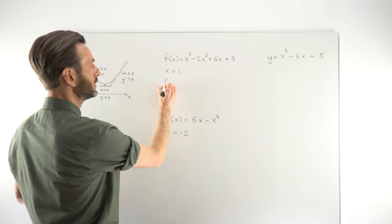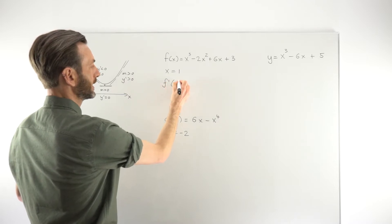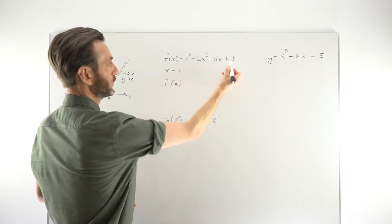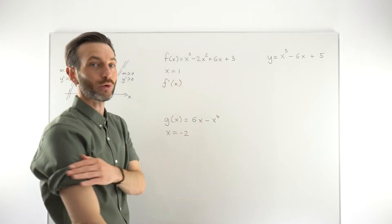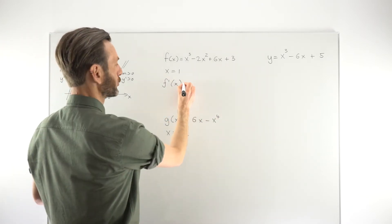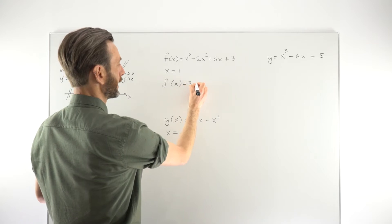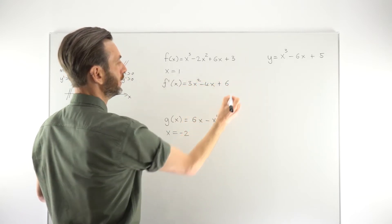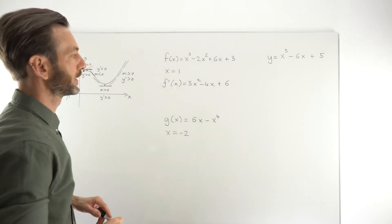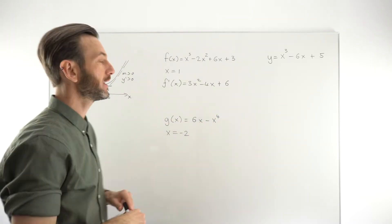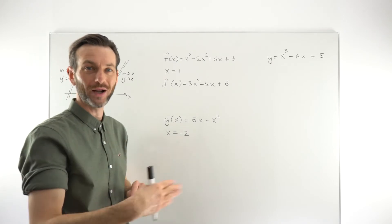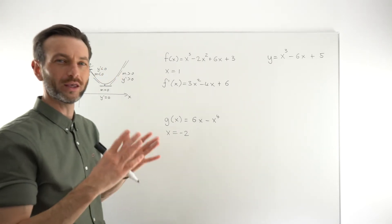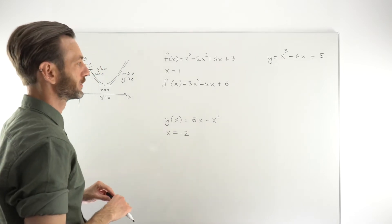Taking this function and finding its derivative using the power rule, since it's a polynomial function: f′(x) = 3x² − 4x + 6. You're probably quite competent with derivatives by this point. If not, go back and practice the key rules like the power rule and product rule.